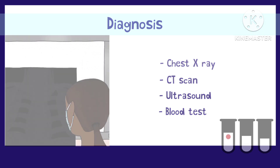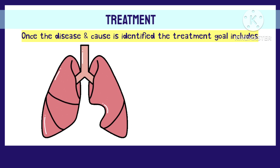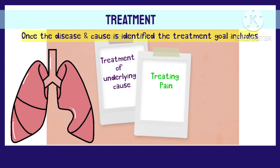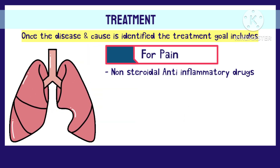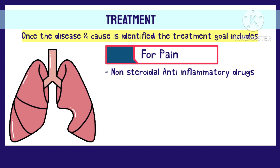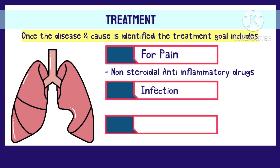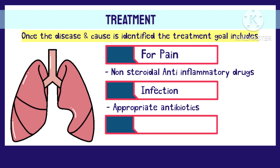Once the disease and the cause is identified, the main purpose of treatment is addressing the underlying cause and treating the pain. For pain, non-steroidal anti-inflammatory drugs or corticosteroids are prescribed, which help in reducing the inflammation and thus decreasing the friction between the two pleura. In case of infections, they are to be treated with appropriate antibiotics, which helps to resolve the inflammation of the pleura.